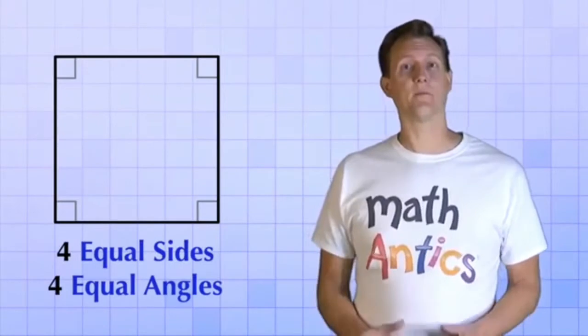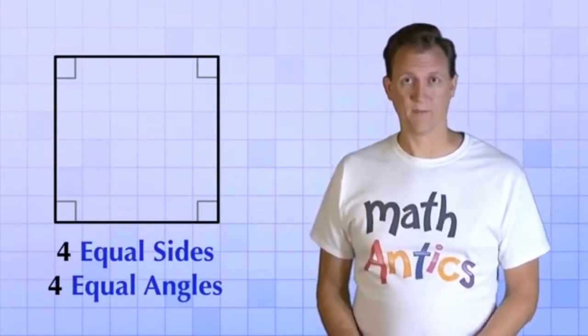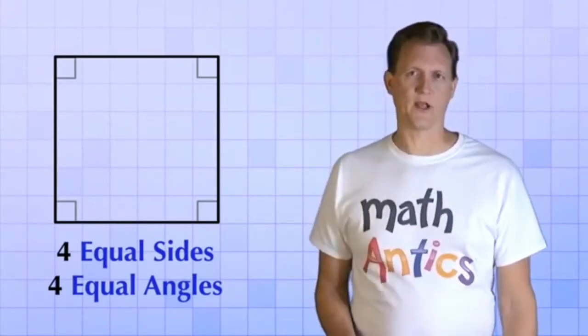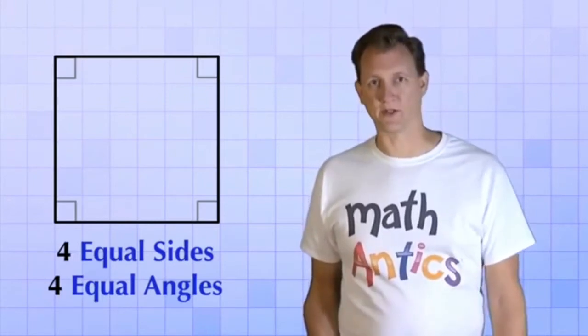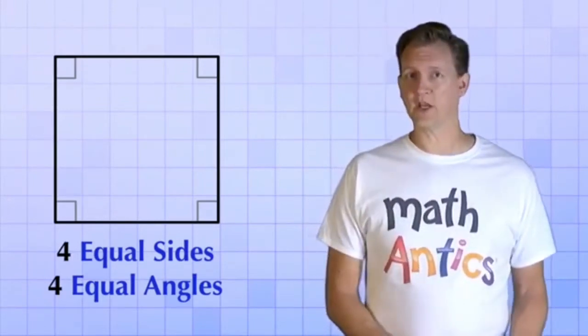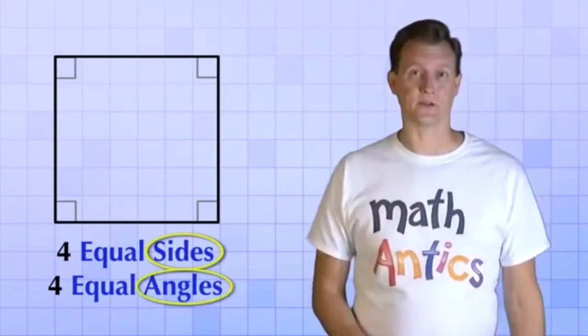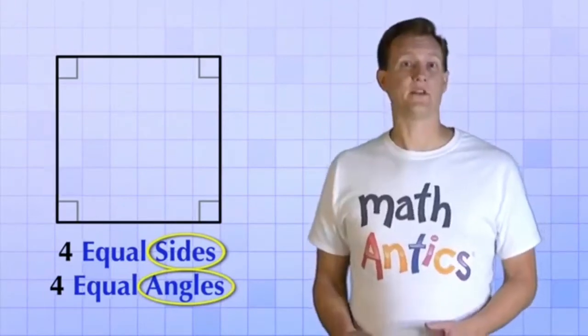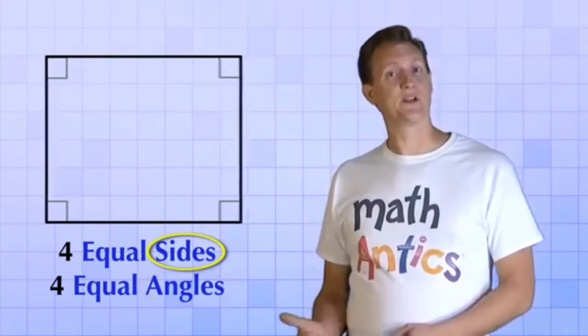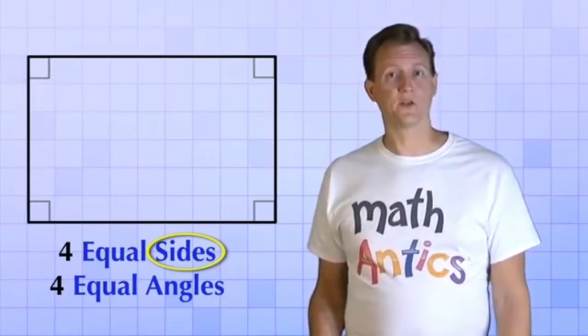Okay, so squares are an important type of quadrilateral, but we're going to make some changes to the square to see what other types of quadrilaterals there are. The two things that we can change are the sides and the angles. Let's start by changing the sides.